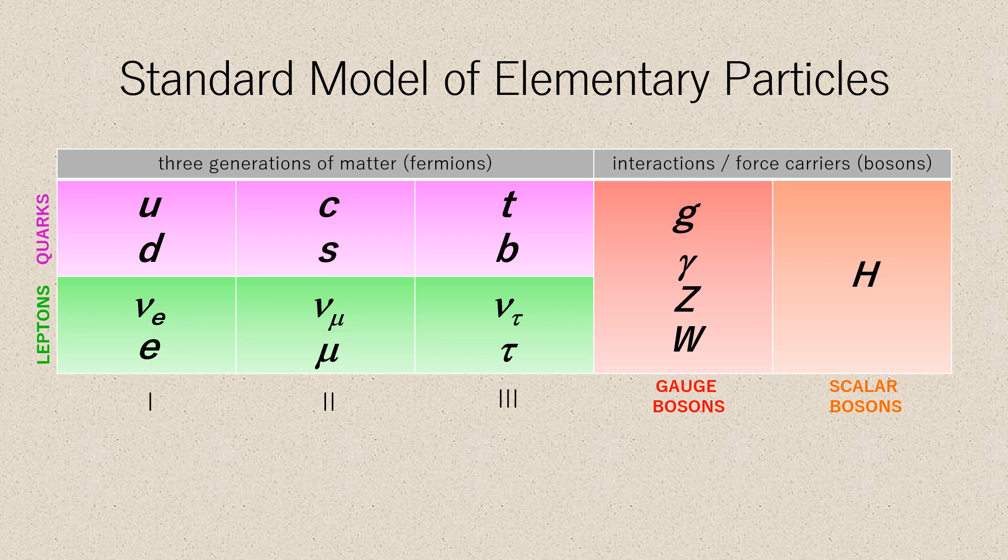The standard model includes 12 elementary particles of spin-1/2, known as fermions. Each fermion has a corresponding antiparticle. The fermions of the standard model are classified according to how they interact.